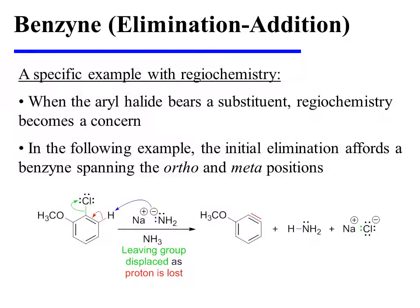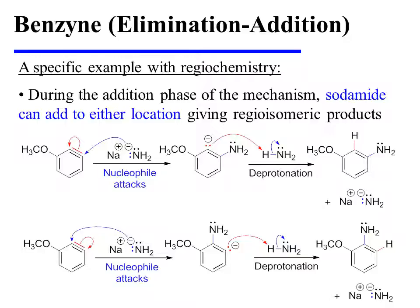When the aryl halide bears a substituent, regiochemistry becomes a concern. In the following example, the initial elimination affords a benzyne that spans the positions ortho and meta to the methoxy substituent. During the addition phase of the mechanism, sodamide can add to either location, giving regioisomeric products. On the first line of this diagram, we see sodamide adding to the position meta to the methoxy substituent, ultimately yielding a meta-substituted product. On the second line, sodamide adds to the position ortho to the methoxy substituent, ultimately resulting in an ortho-substituted product.